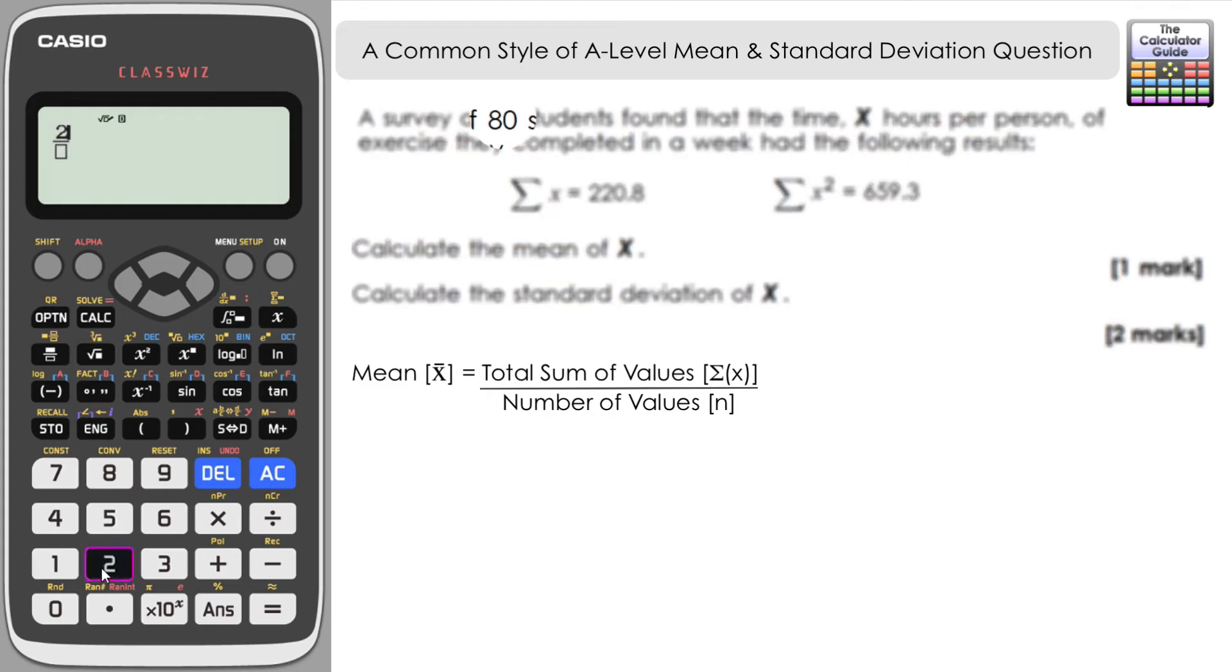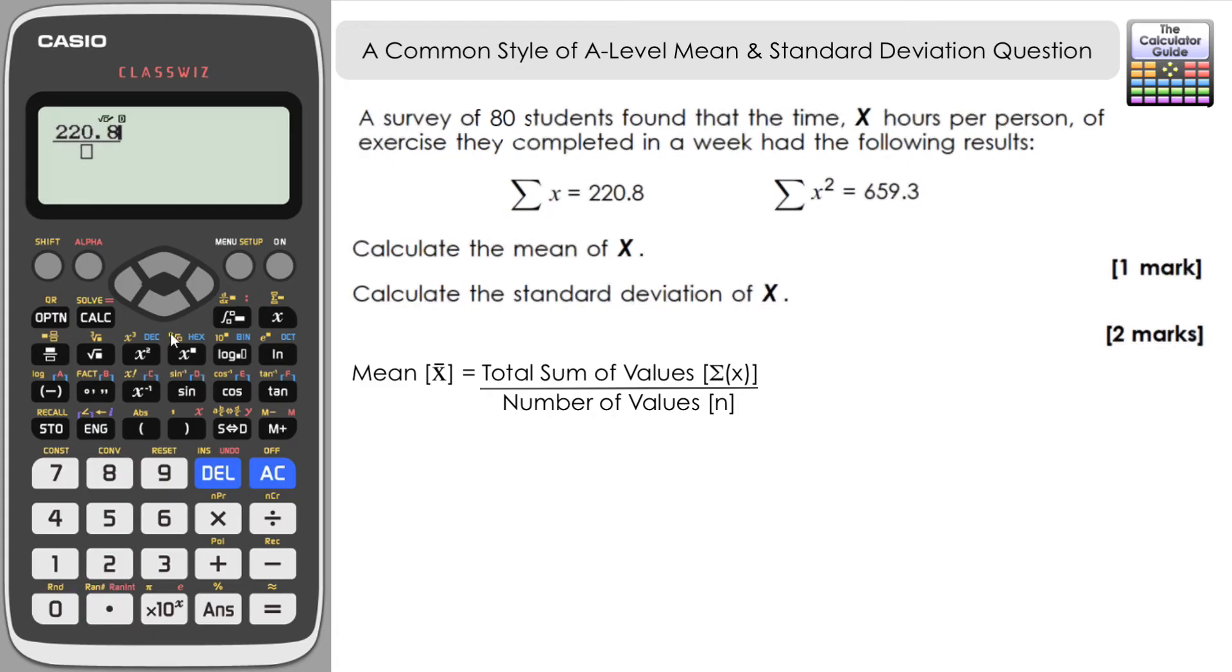So it's 220.8 divided by 80, and you can do this in calculate mode on the ClassWiz. Just input that as a fraction or even a divide and just work that out. Here we have our mean: 2.76. So each student does an average of just over two and three quarter hours exercise per week. Is that enough? Should they be doing more? Perhaps that's a question for another time.